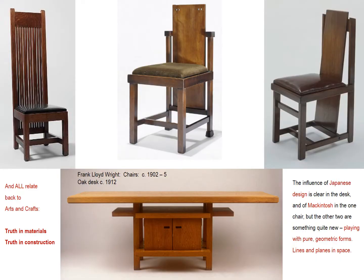Here, some classic Wright chair designs from this era. While one was just seen, the other two are very different and important in that what we see is him playing with pure geometric form — with planes floating and resting in a kind of grid that forms the basic structure of the chair. This kind of thinking and experimentation is exactly the type that will lead to modernism, and is what makes him a forerunner. Even the desk, whose connection to Japanese design is clear, also shows him more interested in floating planes than anything else.